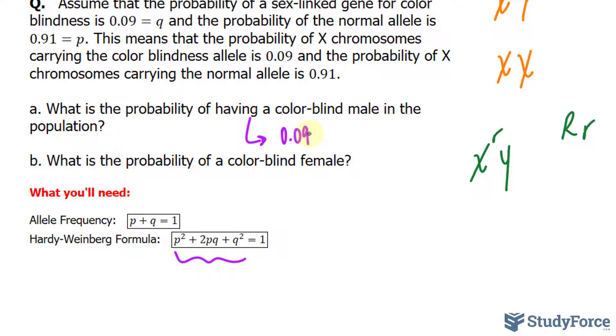In question B, what is the probability of colorblindness in a female? Again, when you're female, you have a better chance of masking that problem. So the only way to actually inherit it is to be homozygous recessive. So you have both little r's coming from both parents.